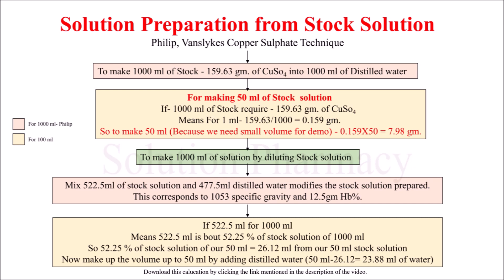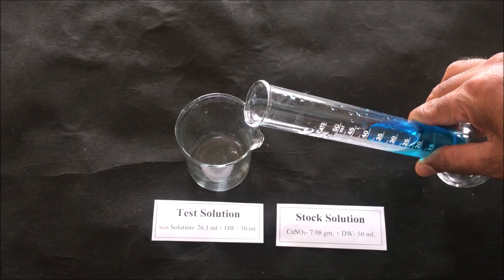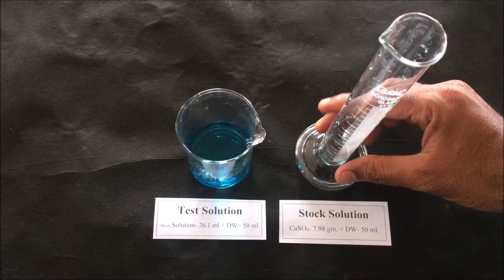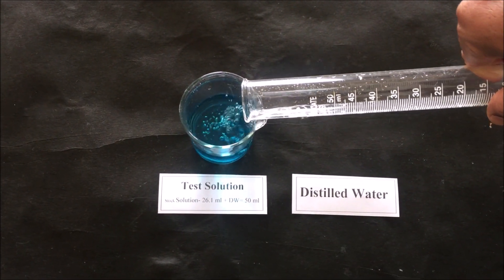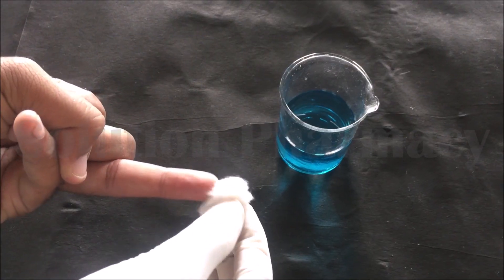After preparing 1000 ml of test solution, the specific gravity of the copper sulfate corresponds to a hemoglobin level of 12.5 gram per deciliter. To prepare 50 ml of test solution, we calculated and taken 26.1 ml of stock solution and added 23.88 ml of distilled water. We measure 26.1 ml of stock solution in the measuring cylinder, transfer it to a clean dry beaker, then measure and add 23.88 ml of distilled water. The 50 ml test solution is now ready.